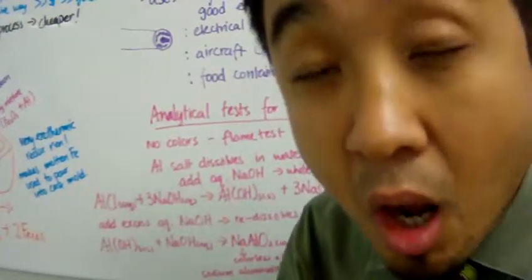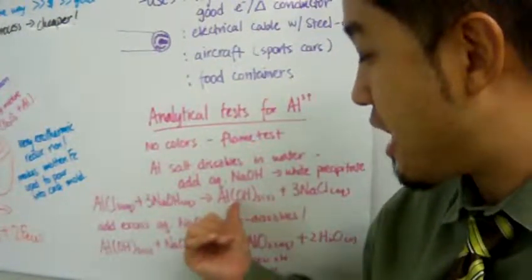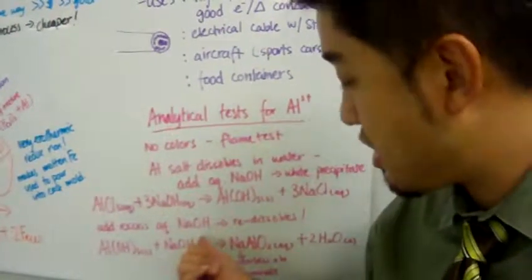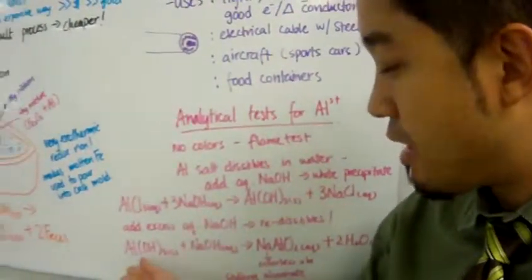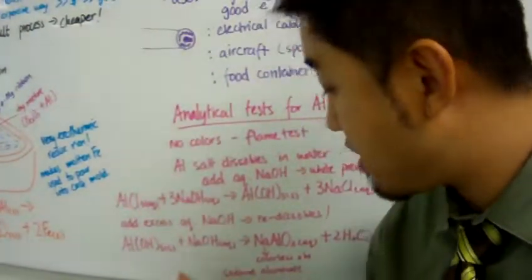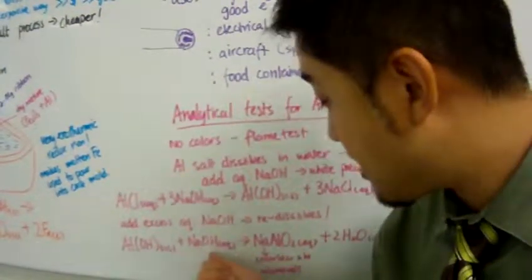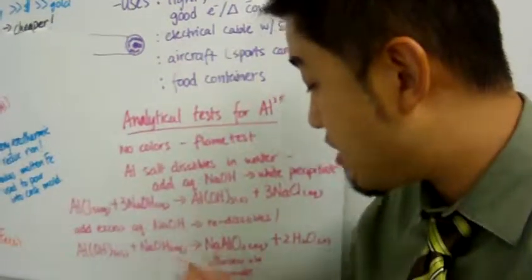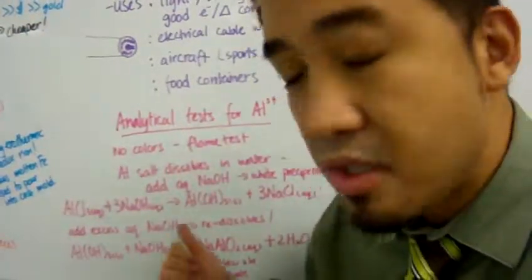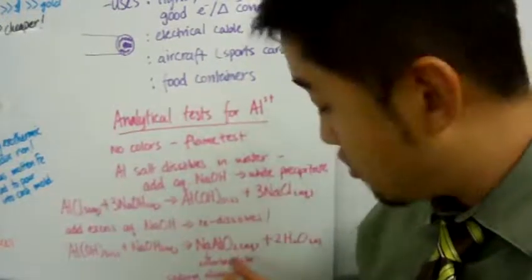However, aluminum hydroxide is an amphoteric oxide. Amphoteric means it can act as an acid even though this is a base. So when you add excess amounts of sodium hydroxide, aluminum hydroxide can now behave like an acid. You have aluminum hydroxide reacting with sodium hydroxide, and you form a salt. Acid-base reaction forms a salt.